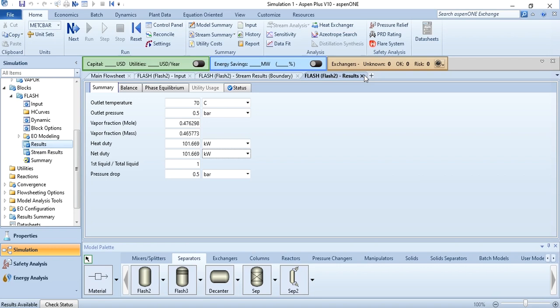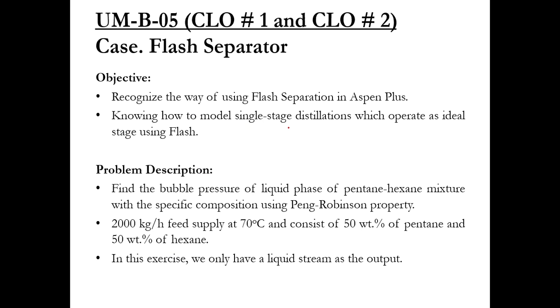The next activity is a bit tricky. The objective is the same as the previous activity, but in this problem we have been asked to find the bubble pressure of the liquid phase — the pressure at which the first drop of vapor starts, meaning the liquid just starts boiling — of a pentane-hexane mixture with specific composition using the Peng-Robinson property method.